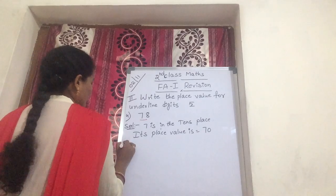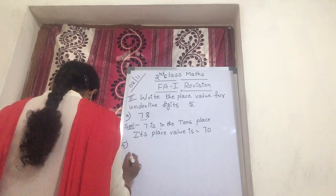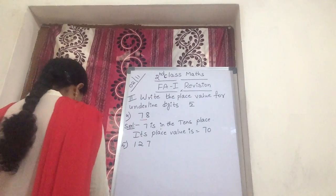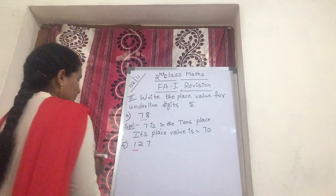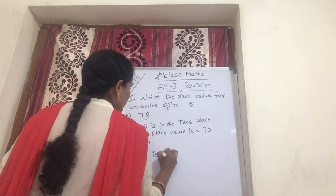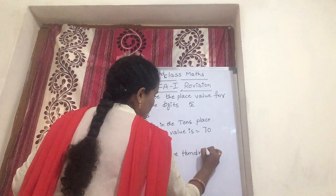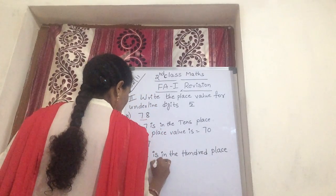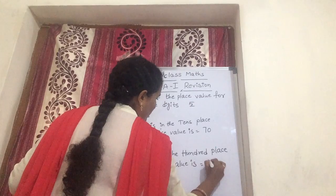Now next, last one: 127, underline on 1. Solution: 1 is in the hundreds place, so its place value is 100.